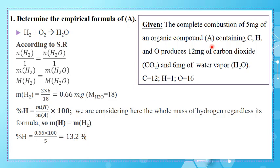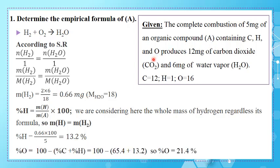Since A also contains oxygen, the percentage by mass of oxygen is determined by subtraction: percentage of oxygen equals 100 minus (percentage of carbon plus percentage of hydrogen). This gives a percentage of oxygen equal to 21.4%.